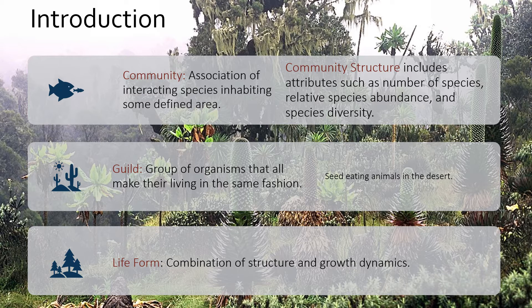Botanists don't use the term guild. They usually use some sort of life form system. You've seen me talk about trees as a life form, shrubs as a life form, grasses, forbs — which are the plants in the grassland that are not grasses — dandelions that die back every winter but re-sprout, annual plants as a life form, and vines as a life form. We have ways of trying to focus in on a piece of all this diversity, because it can sometimes be a little overwhelming how much there is out there.